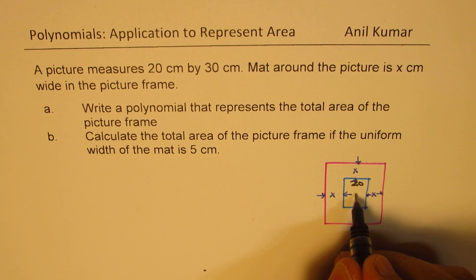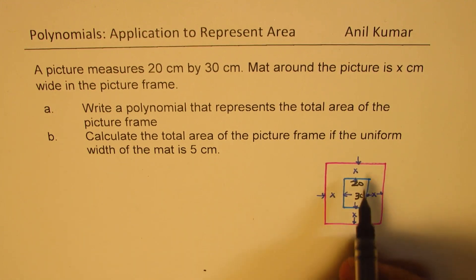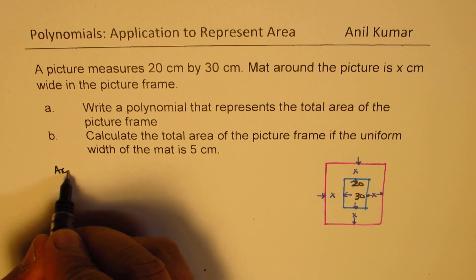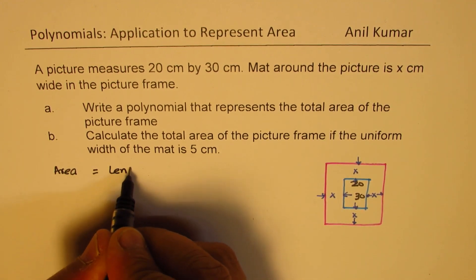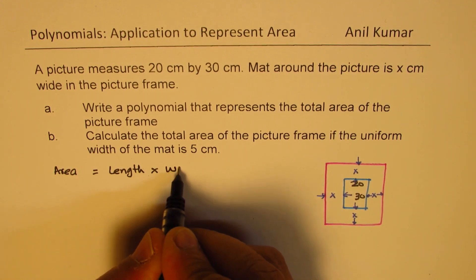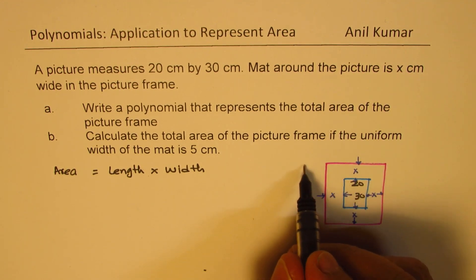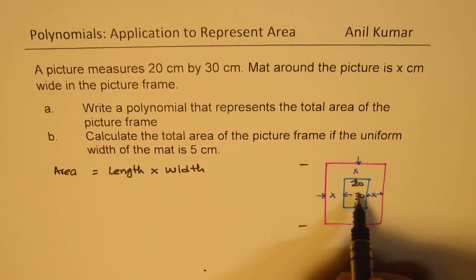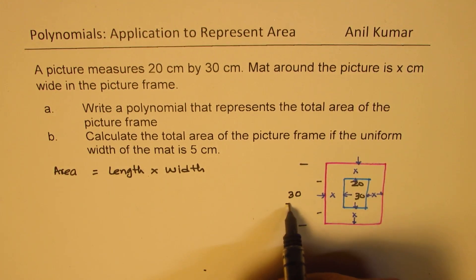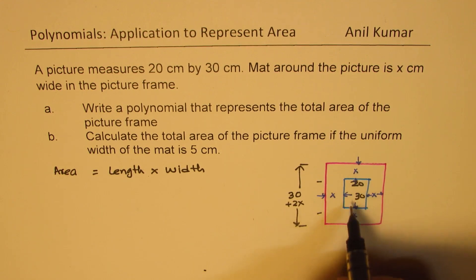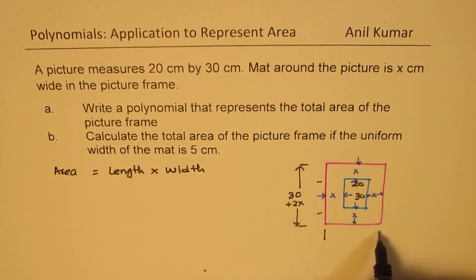The size of the picture is given to us as 20 centimeters by 30 centimeters, so this side is 20 and the other side is 30. Now we need to write a polynomial that represents the total area — that means length times width. The length will be 30 plus x plus x, which is 30 plus 2x. The width is 20 plus x plus x, which is 20 plus 2x, since the mat of x is on both sides.